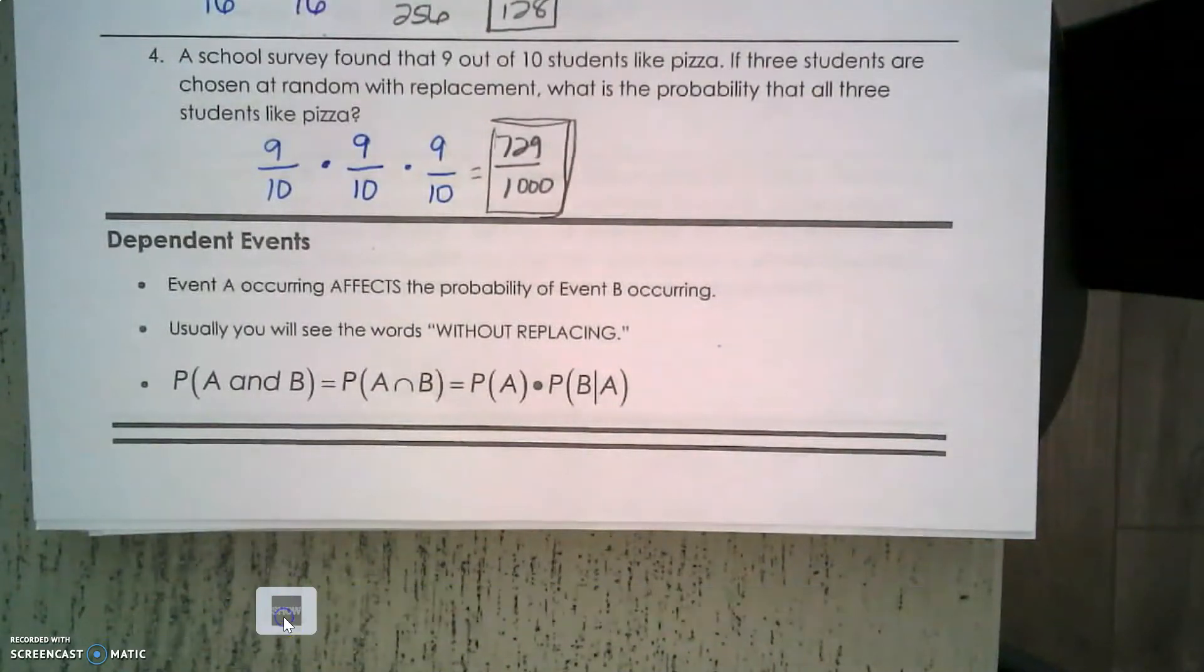Alright, next up is dependent events. Think of what it means to be dependent on somebody - you're relying on what they're giving you, what they've done for you already. So Event A occurring affects the probability of Event B.